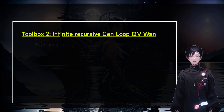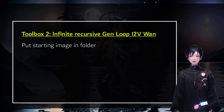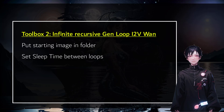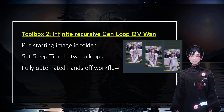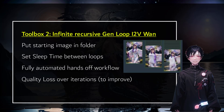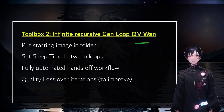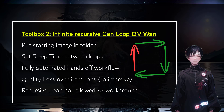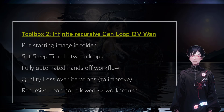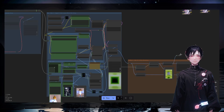Now let's look at toolbox number two: the infinite recursive gen loop image-to-video. It's really just what we were doing before — a loop generation where the last image becomes the first frame of the next video — but now it's going to be in a hands-off workflow. You click run, let it go, and it's going to be generating literally forever until you stop it. Be mindful that there's some quality loss over time, but with Wan it's a bit more forgiving.